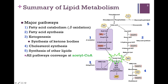Third, we have ketogenesis, which starts with acetyl-CoA and converts those to ketone bodies. In pathway 4, we start with acetyl-CoA to generate cholesterol.